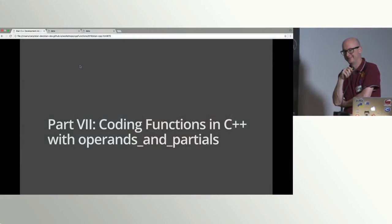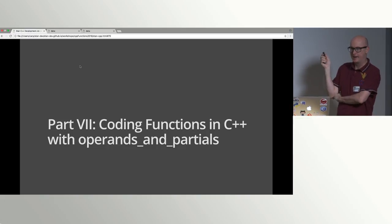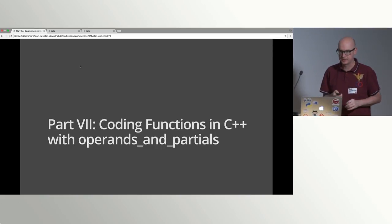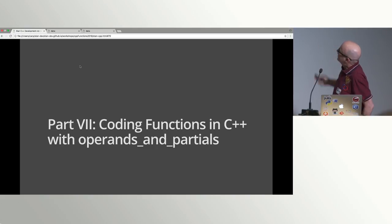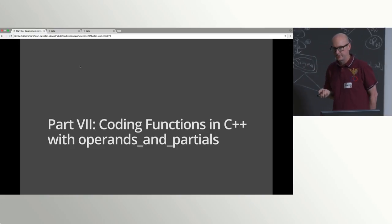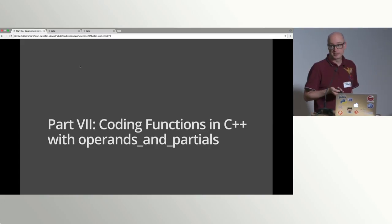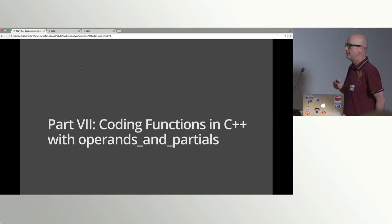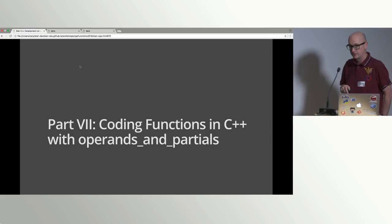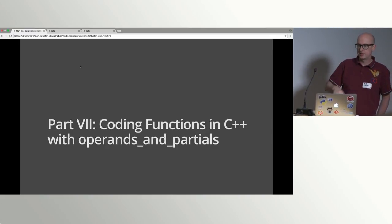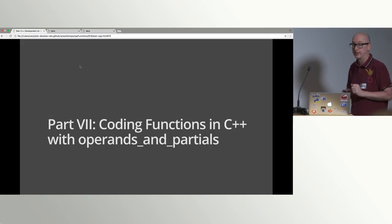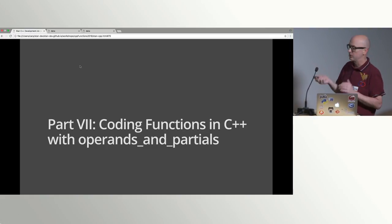Got an hour left — I don't think this is actually going to take an hour at the pace we're going. Now we're going up to coding functions in C++ with operands and partials. Operands and partials is this helper data structure that basically does what it says on the tin — it stores the operands and partials — but it's written in great generality. It actually deals with forward mode autodiff as well as reverse mode autodiff, and it uses lots of cool template expression templates on the inside so you can actually manipulate things with their natural data types.